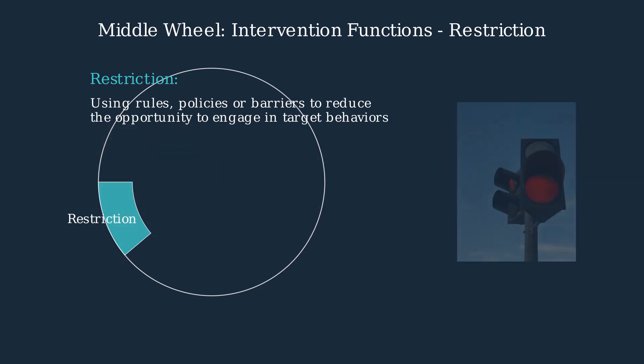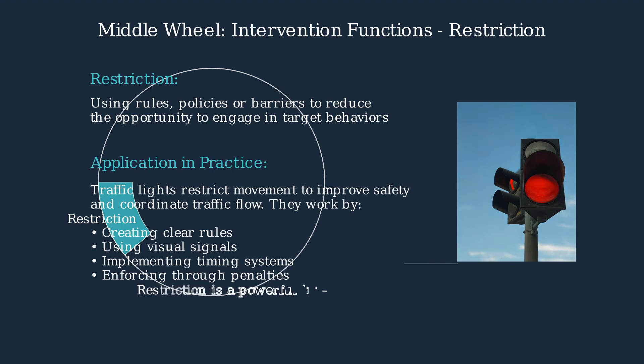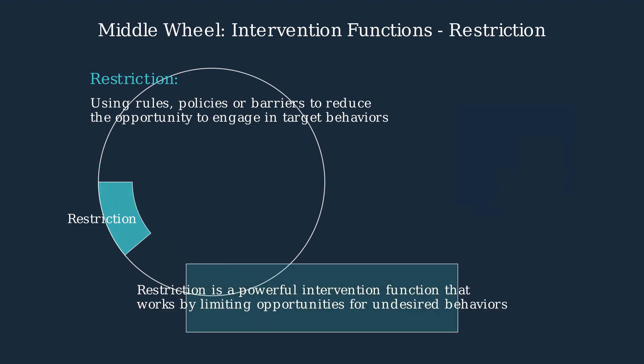A classic example of restriction in everyday life is traffic lights. They restrict movement to improve safety and coordinate traffic flow through clear rules, visual signals, timing systems, and enforcement through penalties. In summary, restriction is a powerful intervention function that works by limiting opportunities for undesired behaviors.